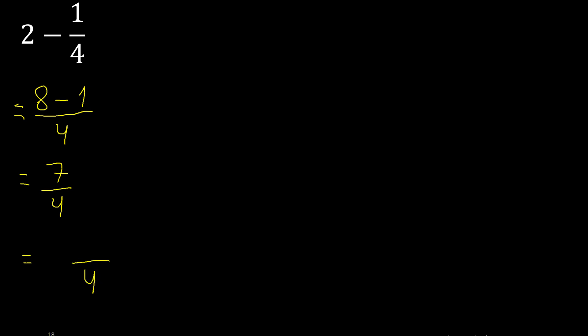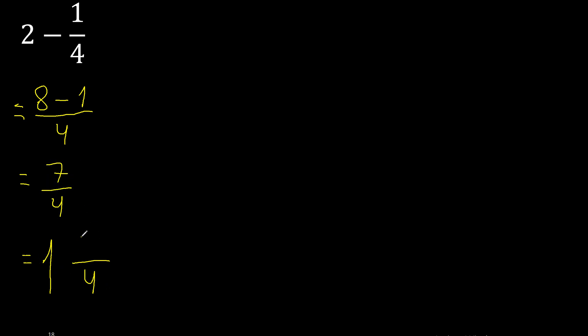4 multiplied by which number is nearest to 7 but not greater? 4 multiplied by 2 is 8 — 8 is greater. Multiply by 1 is 4 — 4 is not greater. So 7 minus 4 is 3.